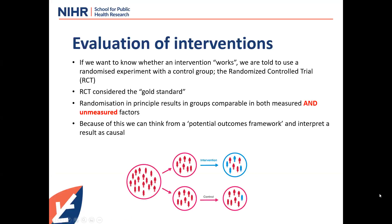Starting with the basics: if we want to know if an intervention or a new policy has an effect, we've always been told to think about a randomized experiment with a control group — a randomized control trial, considered the gold standard. The idea is that randomization in principle results in two comparable groups, comparable in measured but also unmeasured factors. From a potential outcomes framework, we can interpret any effect found as causal.